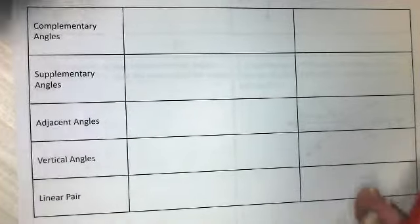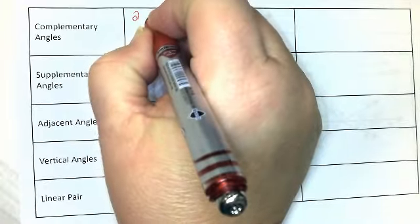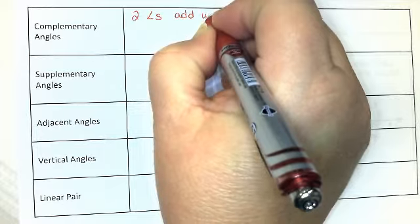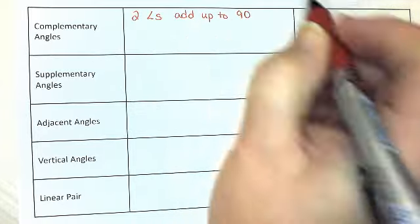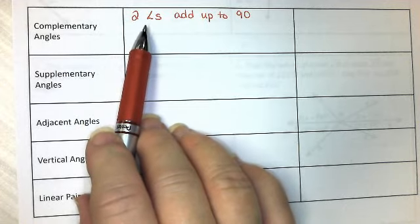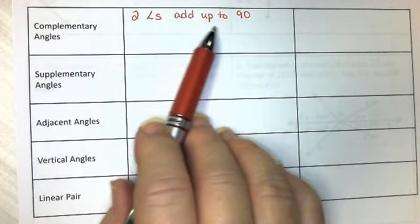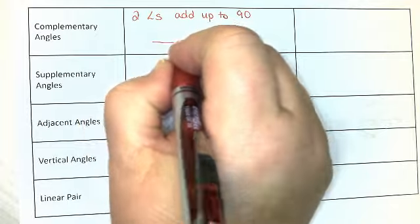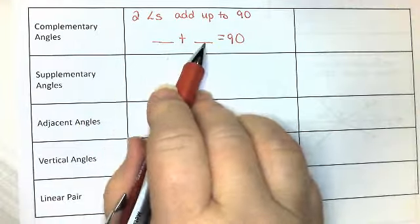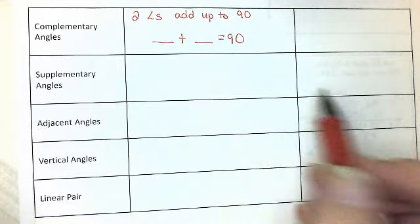The first vocabulary we have is complementary angles. Complementary angles are two angles that add up to 90. Don't say two angles that equal 90 because you might be tempted to make each angle equal to 90, but know that together they add up to 90.